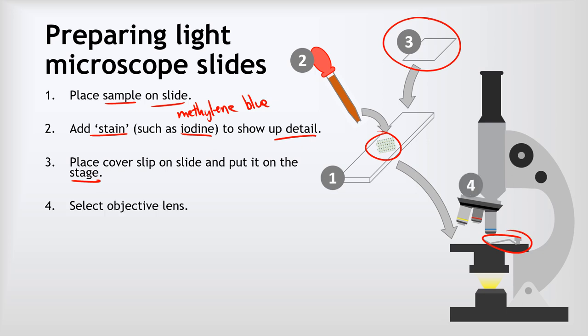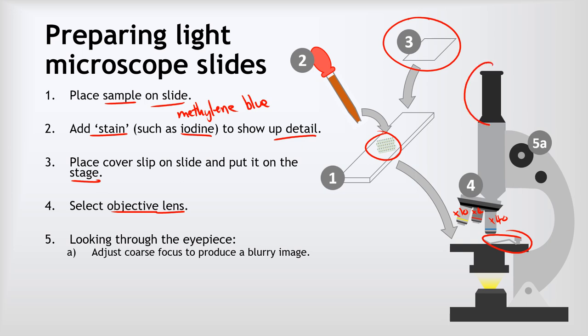Then what we do is we select the objective lens that we want to use. Do we use the times 4, the times 10 or the times 40 lens? Then looking through the eyepiece lens up here we turn the coarse adjustment, the coarse focus dial to produce a blurry image, and then we use the fine focus dial to produce a crisp and clearly focused image.